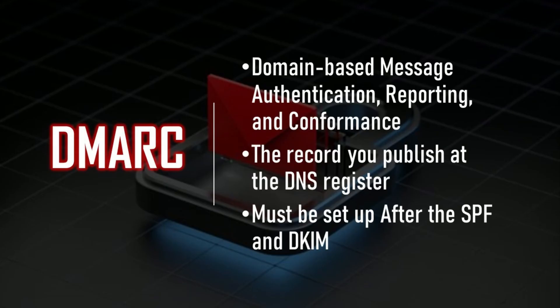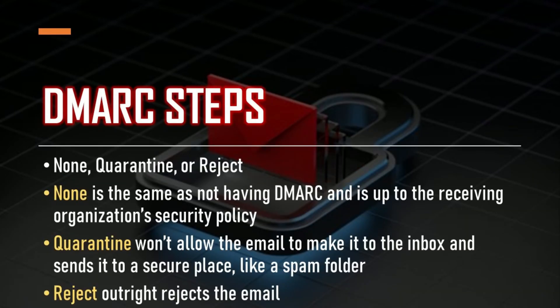The last authorization standard of the video is DMARC. DMARC is Domain-Based Message Authentication Reporting Conformance, and this is a record that you can publish at the DNS register. This has to be set up after SPF and DKIM, because these instructions provide guidance on what to do if an email coming from your organization fails either SPF or DKIM. Along with relying on established SPF and DKIM standards, it piggybacks off of DNS. The steps can be None, Quarantine, or Reject. None treats the mail the same as if there were no DMARC validation, and leaves it up to the recipient organization's security and policy.